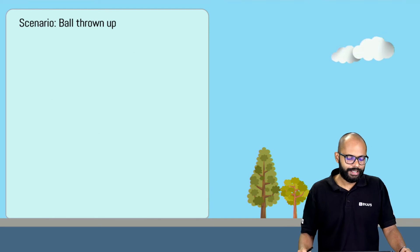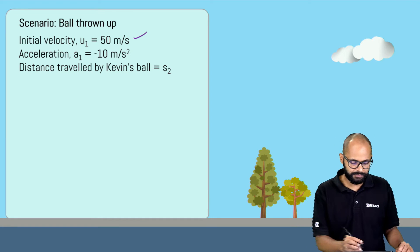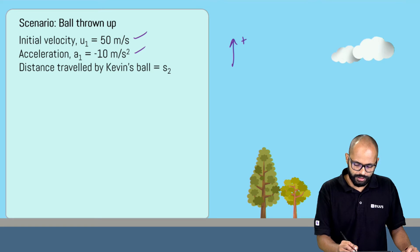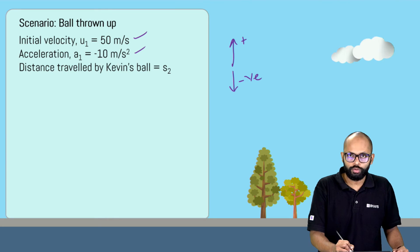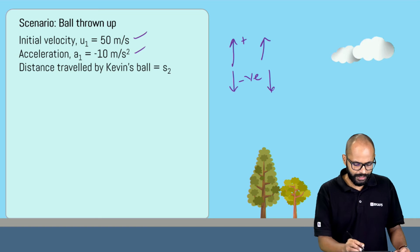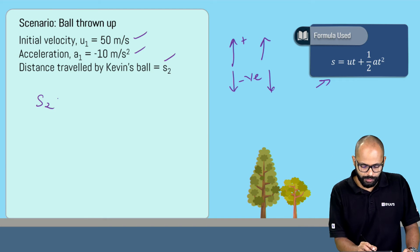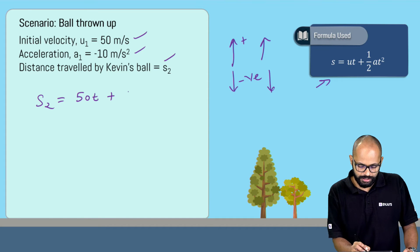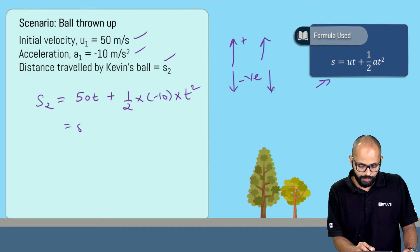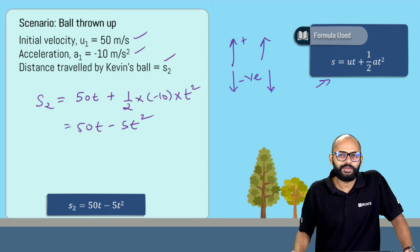Now for the ball which is thrown up: u is 50 meter per second, a is minus 10 meter per second squared. Taking upward as positive, the initial velocity is upward (positive) and acceleration is downward (negative). Distance traveled by Kevin's ball is s2. Using the same equation: s2 = 50t + ½×(−10)×t², which gives s2 = 50t − 5t².